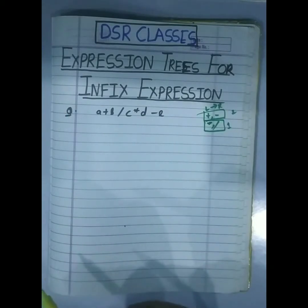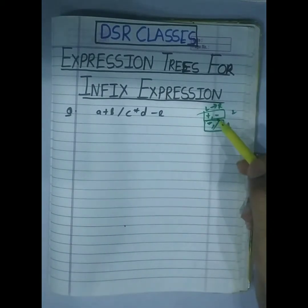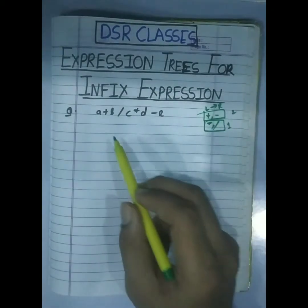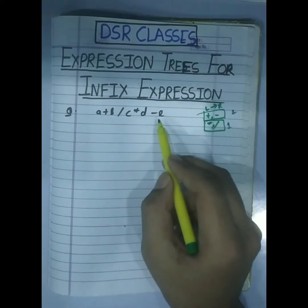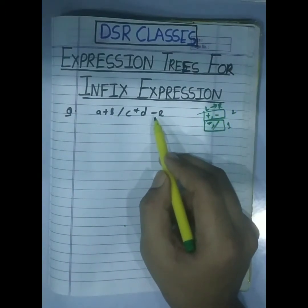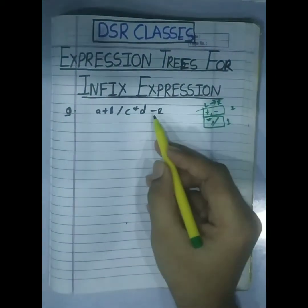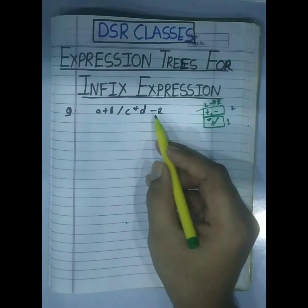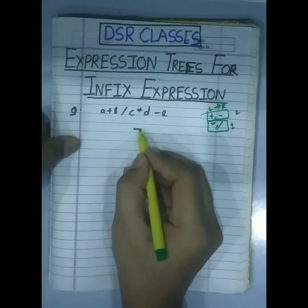So what is the first operator? Basically we will make the root node. The lowest priority is plus and minus — scanning left to right, we find minus. So minus is the root node.